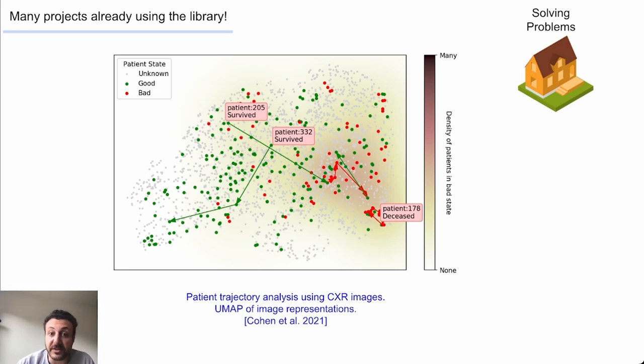This project aims to predict the trajectory of pneumonia patients. The representations from pre-trained classifiers are used with a unit to plot the trajectory of patients. Here again, the model didn't require many images to train.